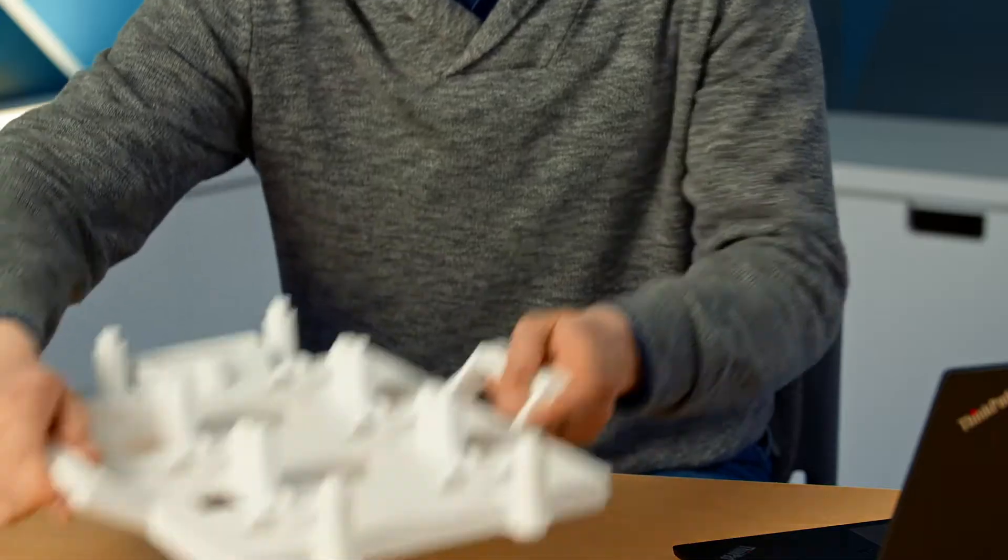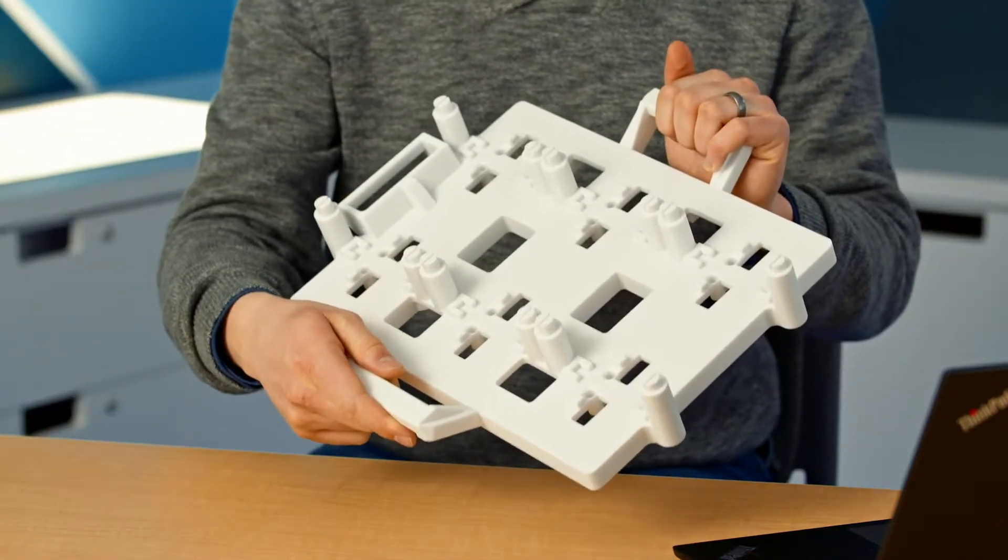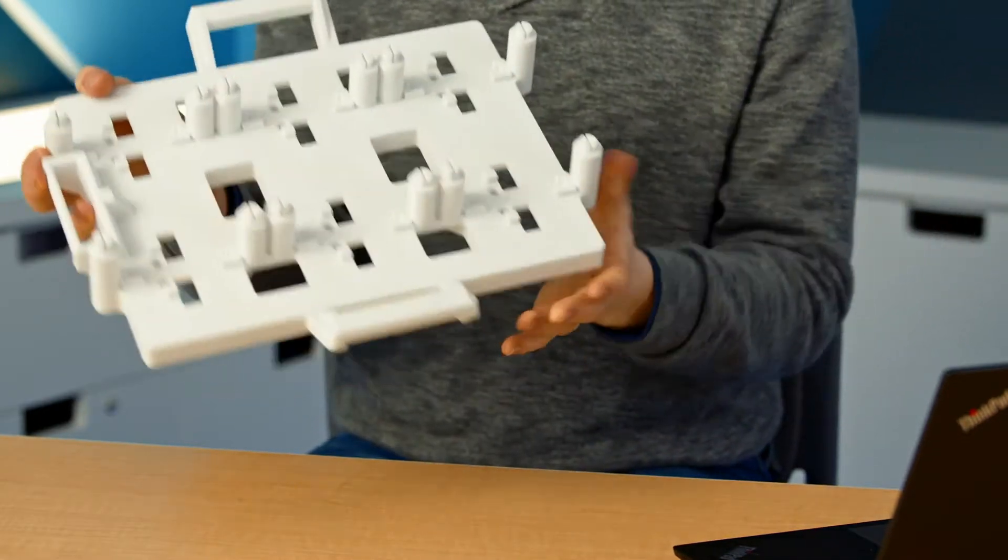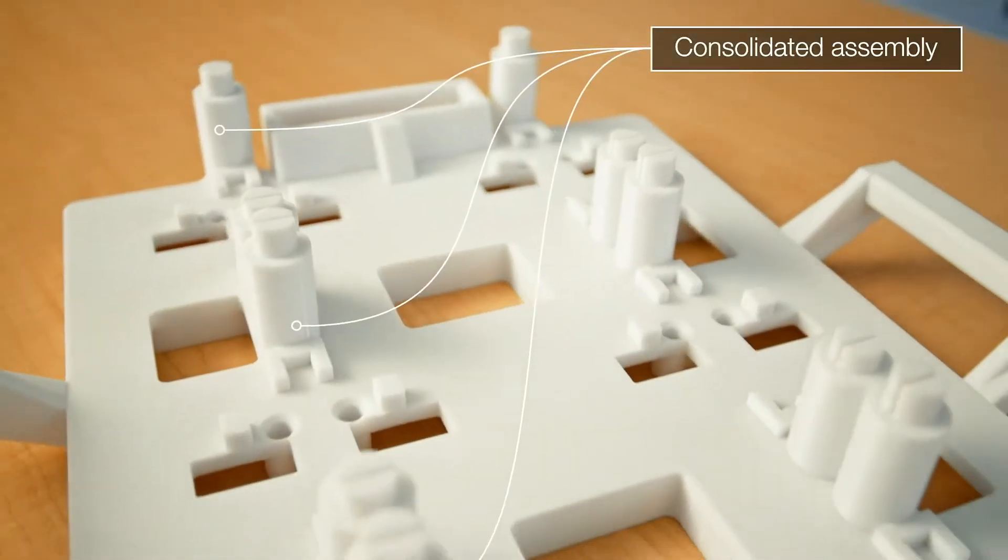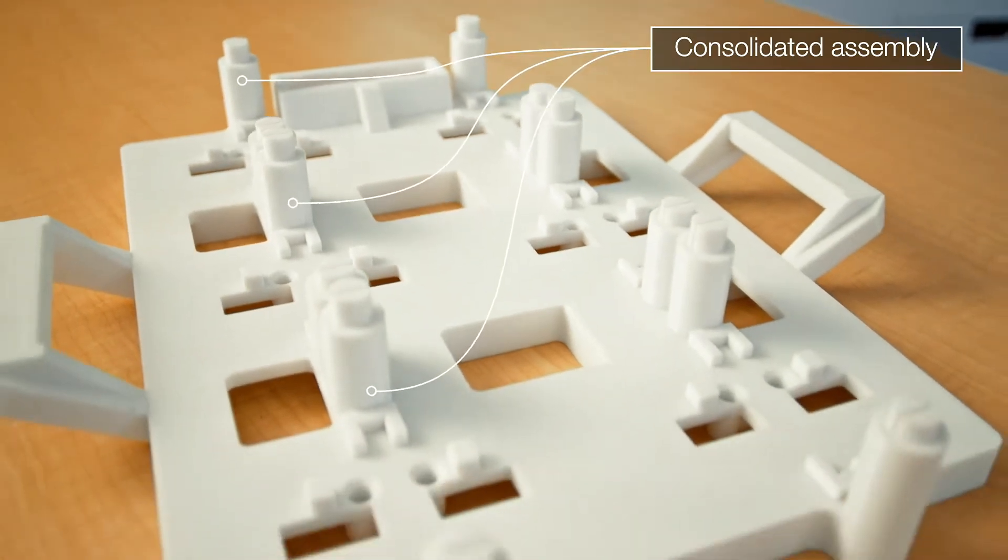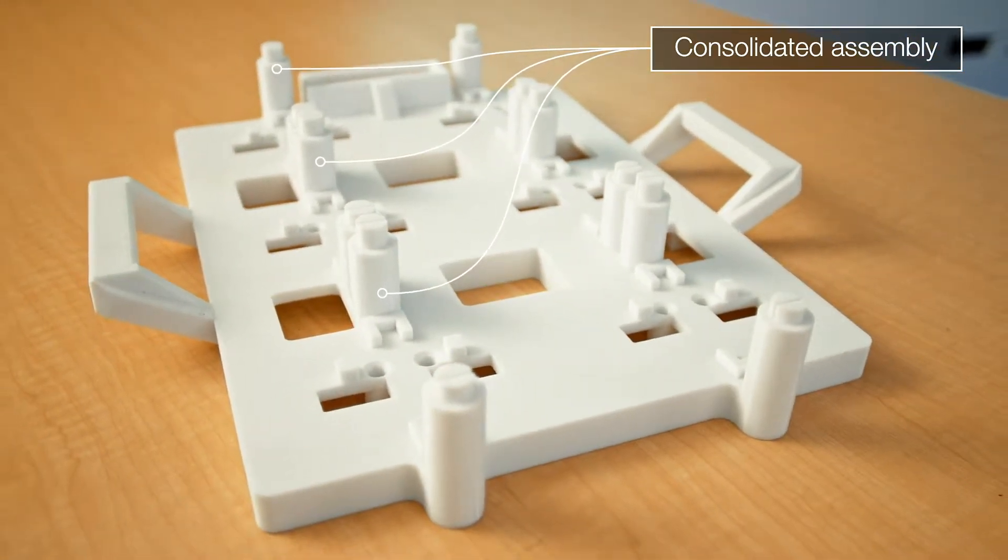So for example, with this inspection fixture here, there are several traditionally manufactured pieces that all have to be manually assembled after the fact. With 3D printing, we can digitally consolidate the assembly so that there aren't any unknowns when we create the part.